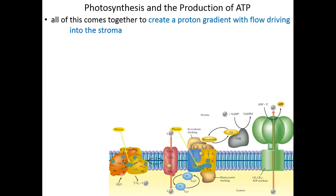So here is the full story, then, in all of its glory. All of this comes together to create a proton gradient with the flow of protons driving towards the stroma. We have protons within the thylakoid disk that want to leave into the stroma of the chloroplast. Those protons were pumped into the thylakoid disk, either through the electron transport chain between photosystem 2 and 1, or by photosystem 1 directly when our amounts of NADPH are high enough.